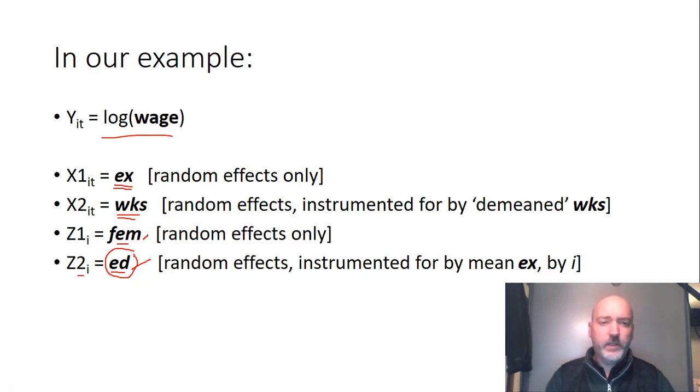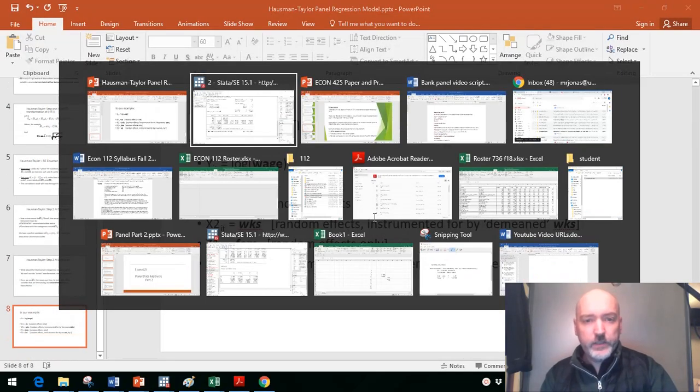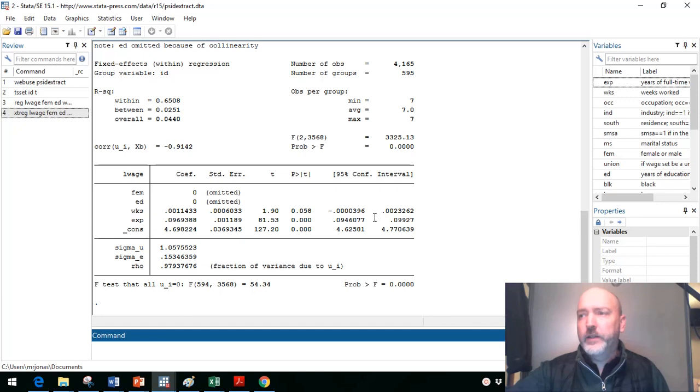It's going to be random effects across the board. Every variable is going to be transformed with random effects. For the X1 and the Z1, that's all we're going to be doing. For the X2 and the Z2, there's going to be our instrumental variable. So here the demeaned version of number of weeks worked is going to IV for the random effects transformed value. And then remember our X1 mean is going to be the IV for our Z2. So that's going to be played here by work experience IVing for education. Okay, so we've got a lot going on. Luckily, if you know how to use the command, Stata is going to do all of this for us. So let's go ahead and jump back into Stata and use that Hausmann-Taylor command.